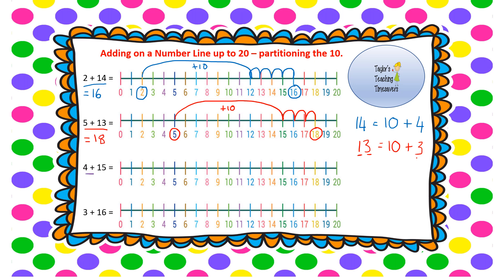Next question: 4 add 15. Partition 15 into a 10 and a 5. When you're doing this you might find it helpful to write the partitioned number on one side so you can see clearly that you need a jump of 10 and a jump of 5. The first number is 4 — circle 4, then add 10: 4 add 10 gets me to 14. Now I've got 5 more spaces to jump: 1, 2, 3, 4, 5. I land on 19, so 4 add 15 equals 19.